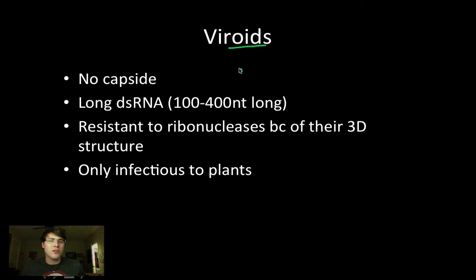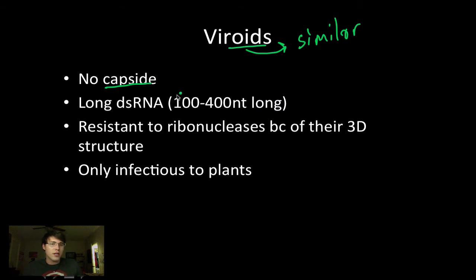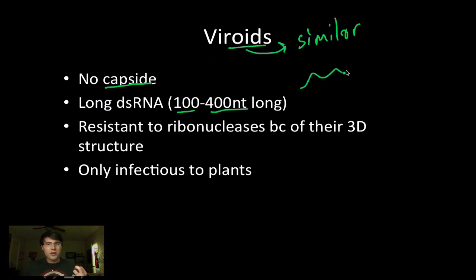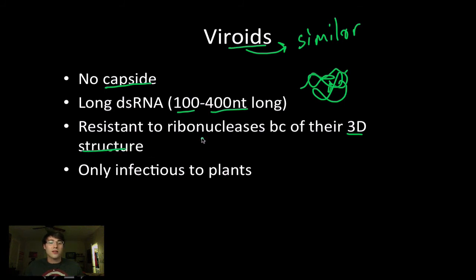Viroids — the suffix -oid means similar — are similar to viruses. They don't have any capsid protein coating them, but they do contain long double-stranded RNA anywhere between 100 to 400 nucleotides long. What's interesting is that RNA can self-fold in on itself, giving rise to a three-dimensional structure that provides resistance to ribonucleases. Viroids are only really found in infectious plants.